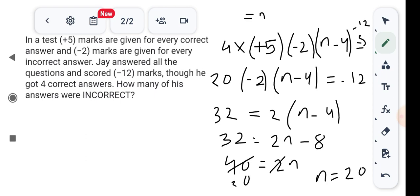Okay, how many of his answers were incorrect? Incorrect answer, number of questions N which is 20. So how many of his answers is correct? 4. Number of questions is 20 which is 4 which is correct, means 20 minus 4 which is correct, so how many of his answers is 16 which is incorrect. Thank you.